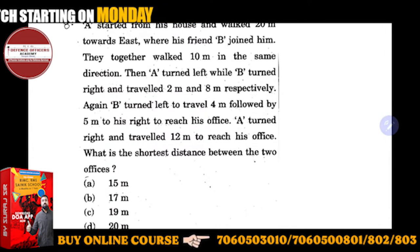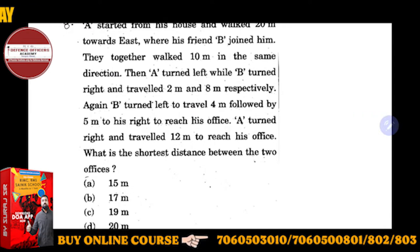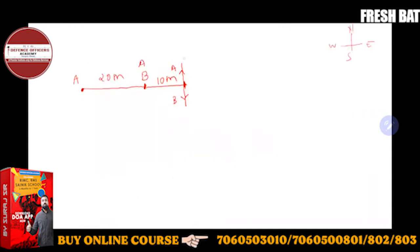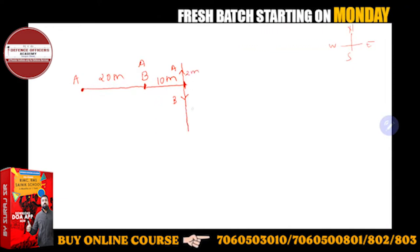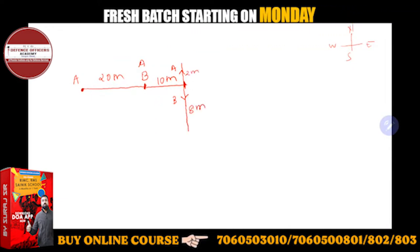A turned left and B turned right and traveled 2 meters and 8 meters respectively. A goes 2 meters so this must be 2 meters, and B goes 8 meters so this must be 8 meters.